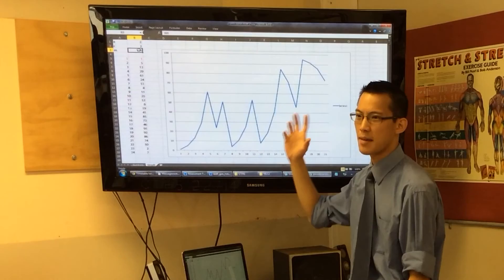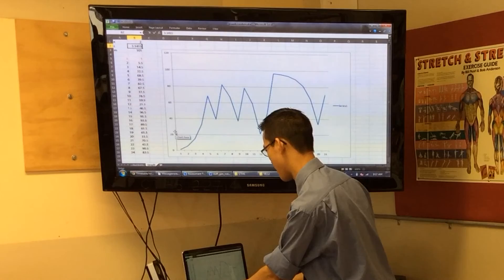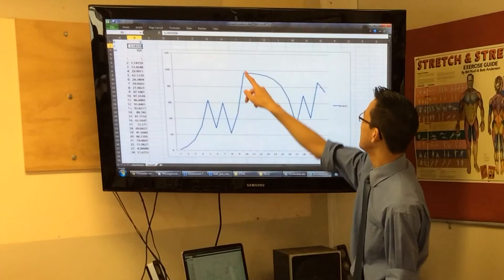So there you go, random number generators. They're kind of like your last piece of the puzzle when it comes to cryptography.